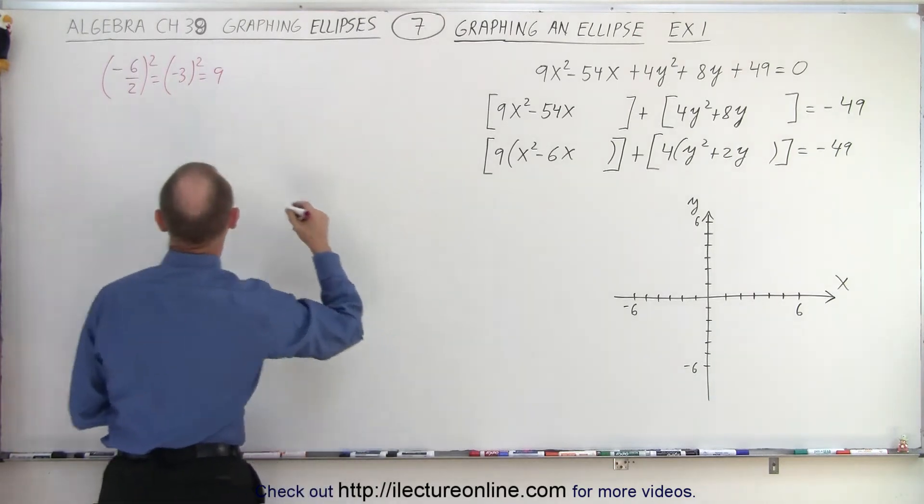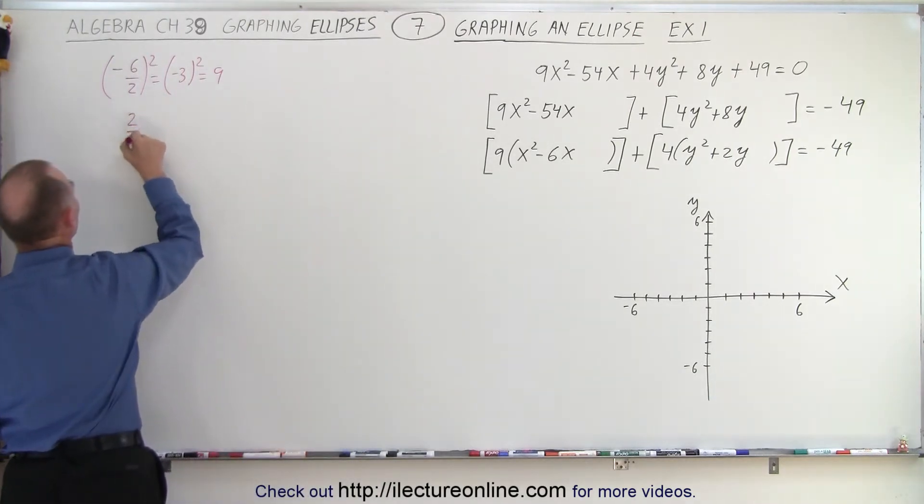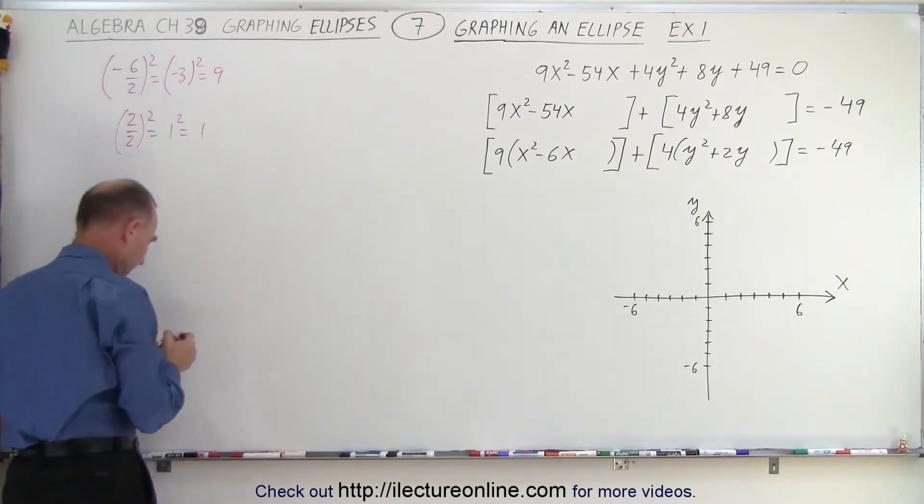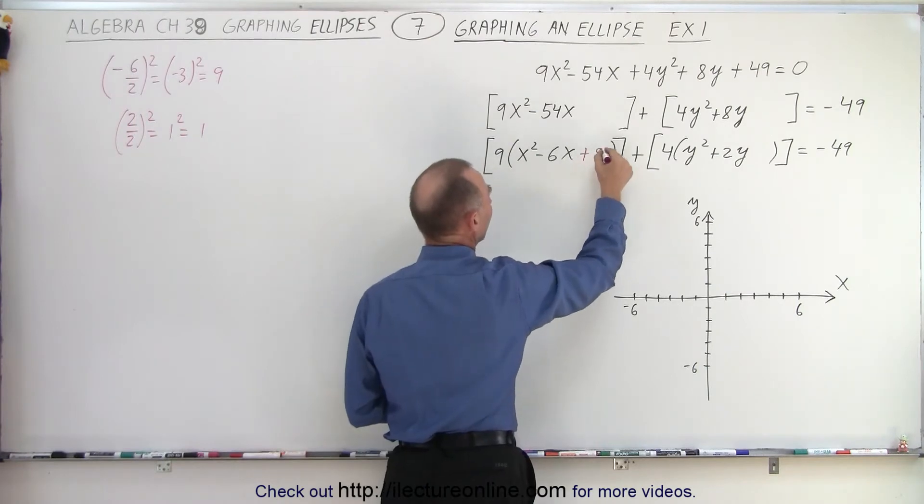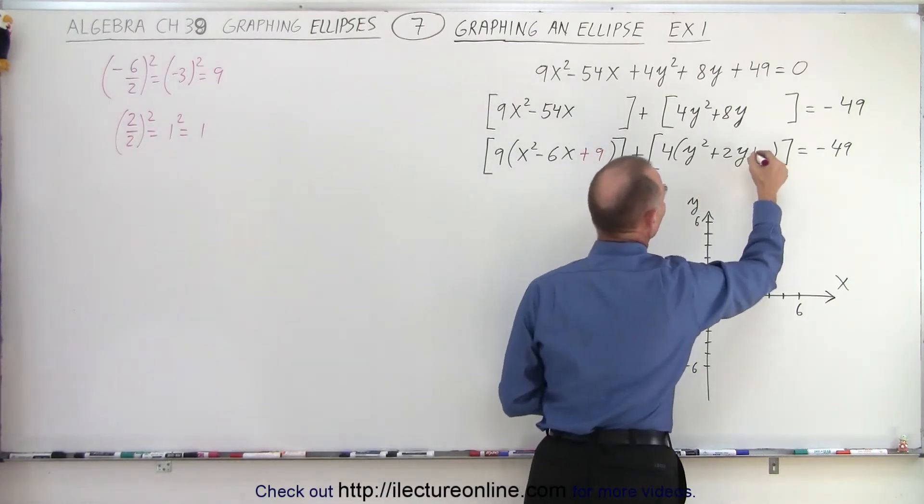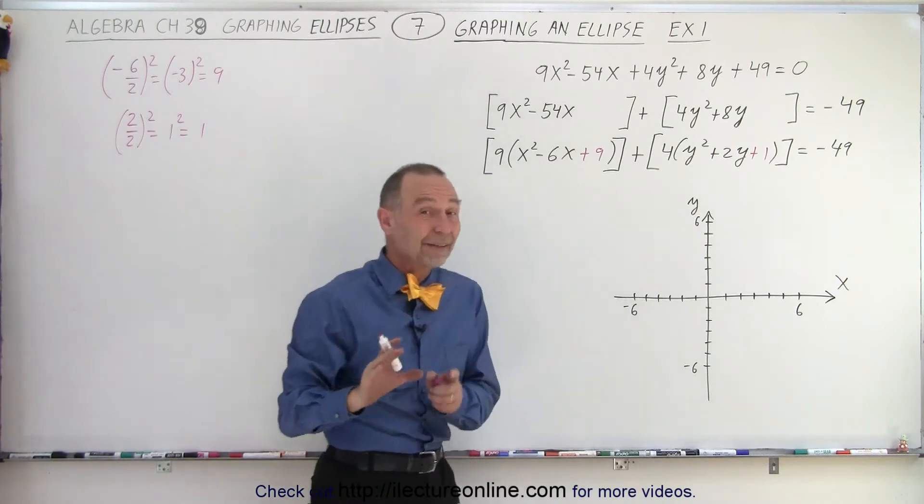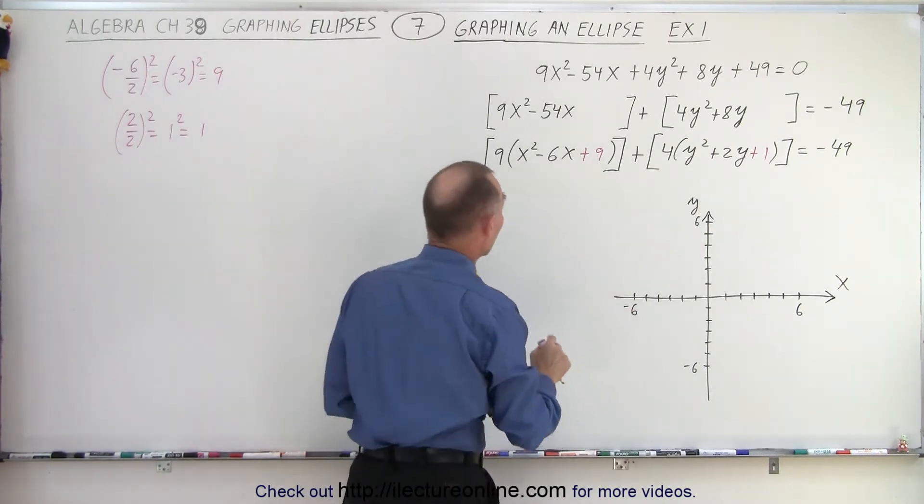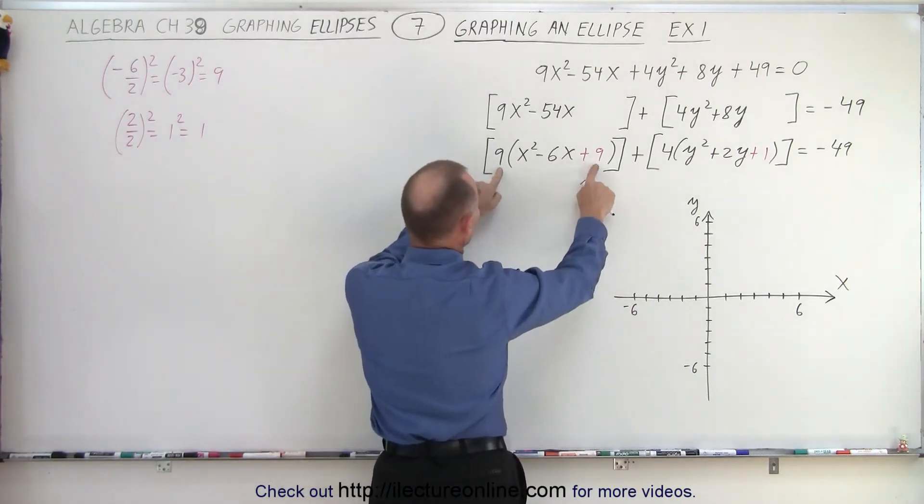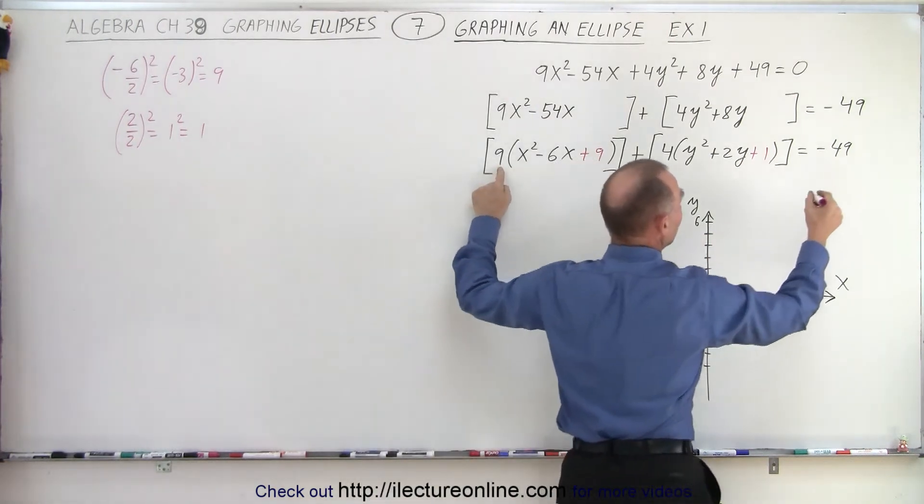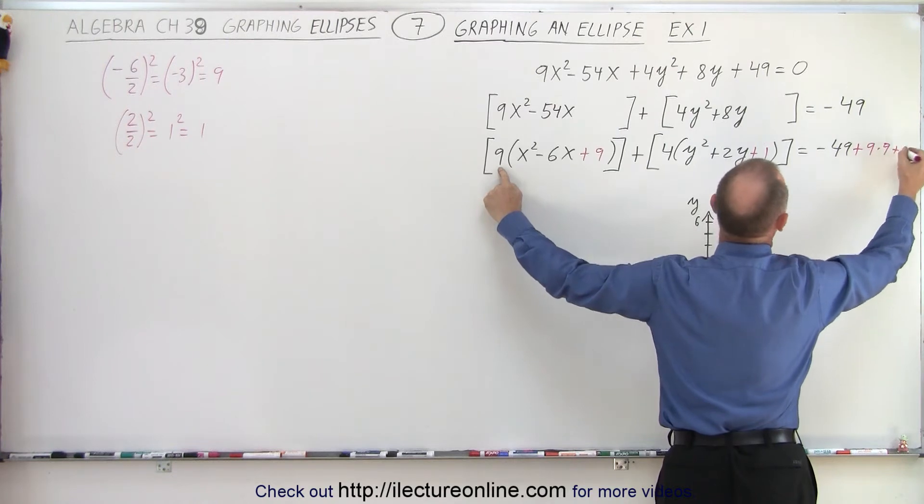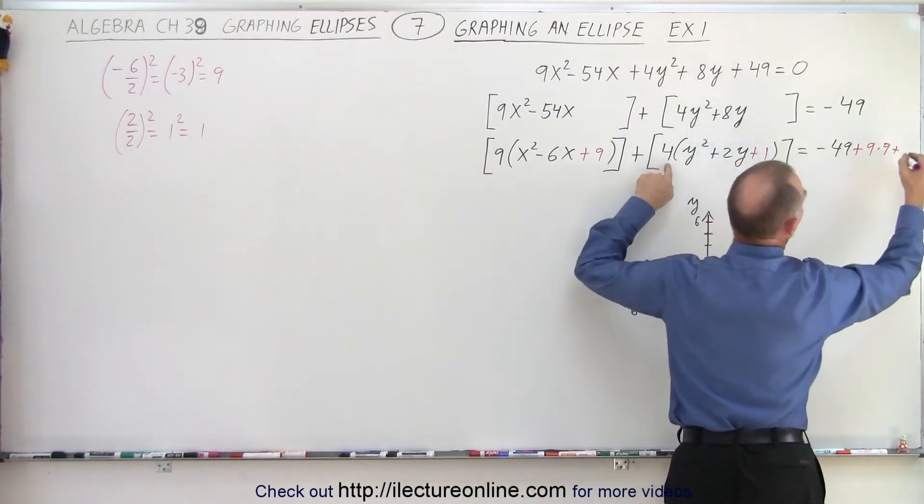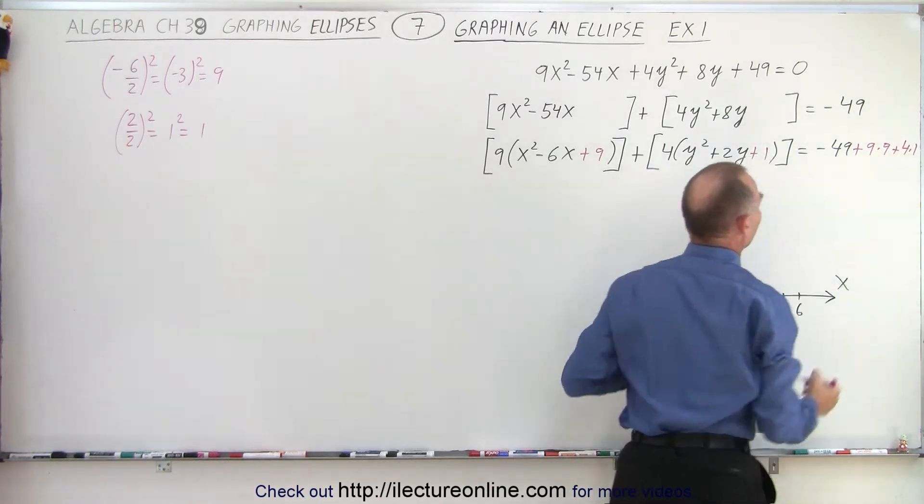For the other one, we take the number 2, divide by 2 and we square it, which is equal to 1 squared, which is equal to 1. So that means we need to add a 9 here plus 9, and we need to add a plus 1 there. But of course, if we do that to the left side equation, we must do it to the right side equation. But notice that this 9 is multiplied by this 9, so essentially what we do here is we add plus 9 times 9 and plus 4 times 1.